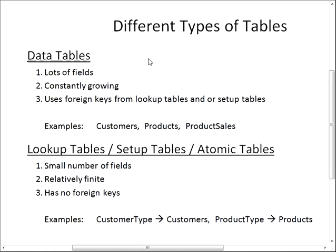In a database or software program, a lot of times you may have to pick options from a dropdown or a list box. Generally speaking, those dropdowns are being populated or filled with information that comes from these smaller lookup tables. Here's what it might look like graphically, just as a couple of examples.